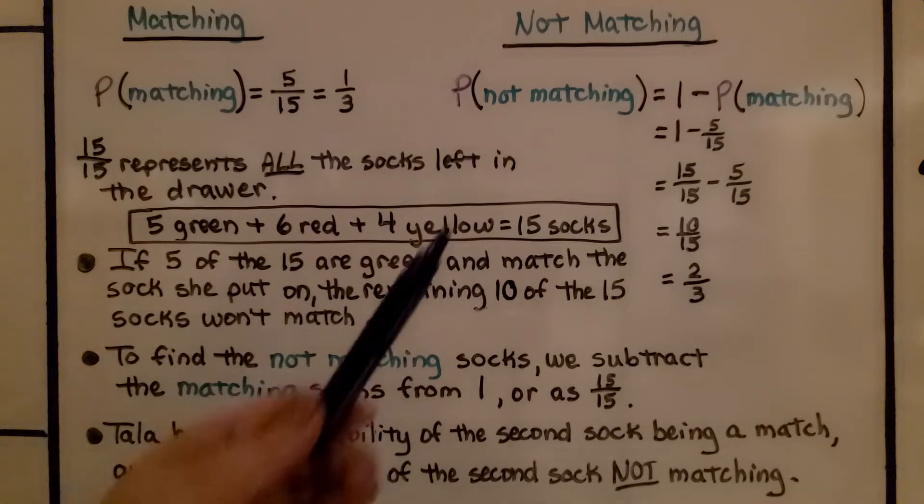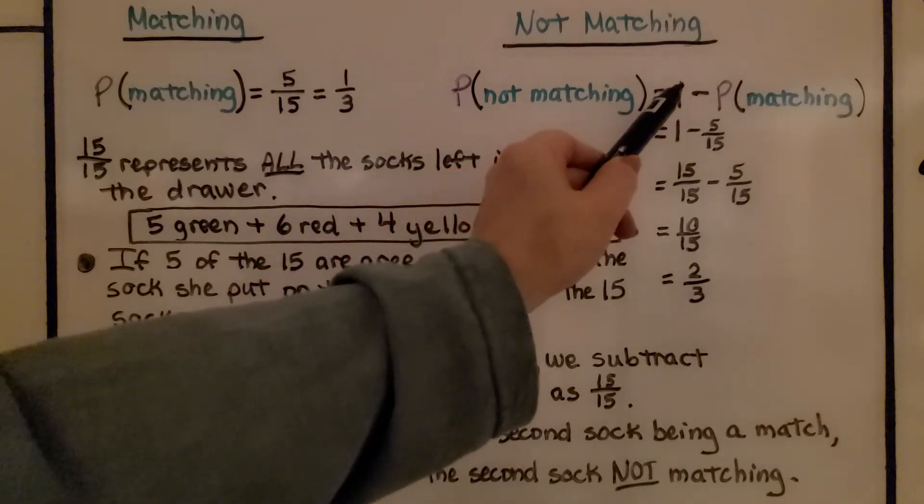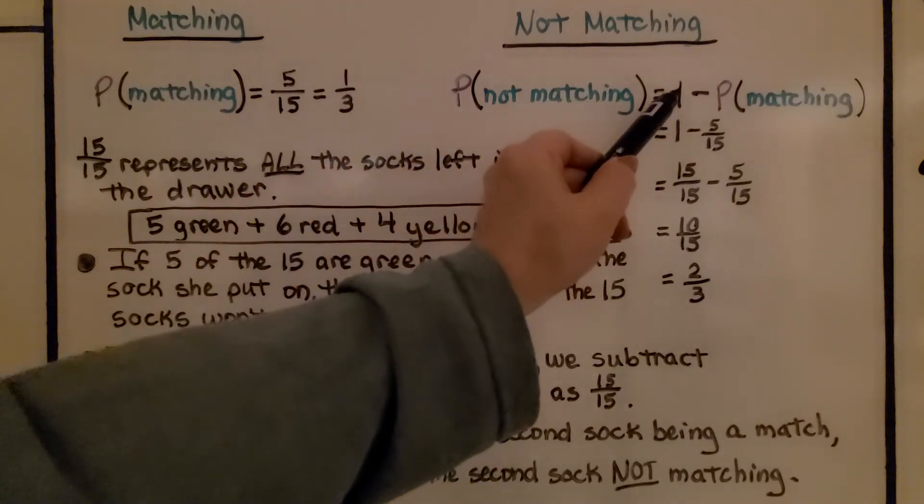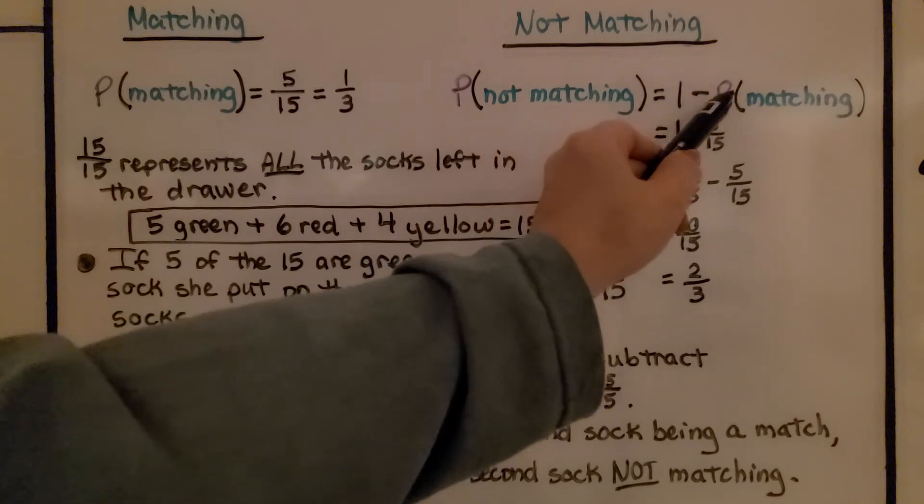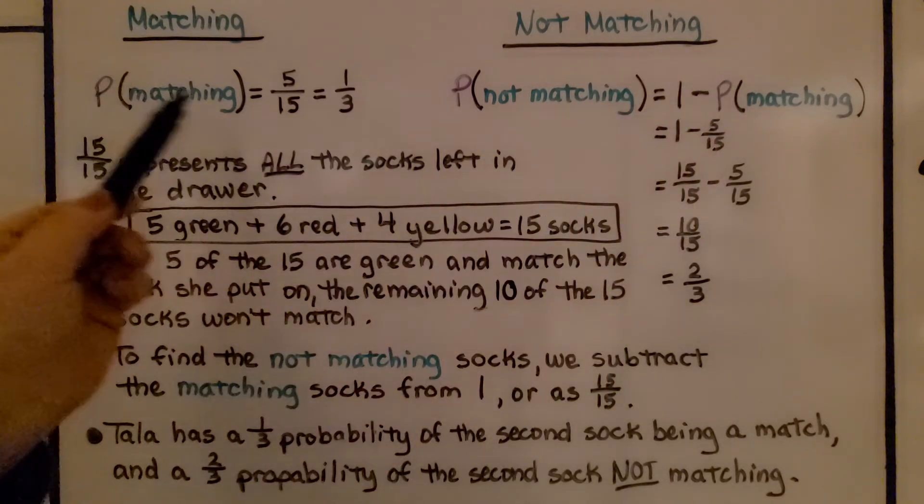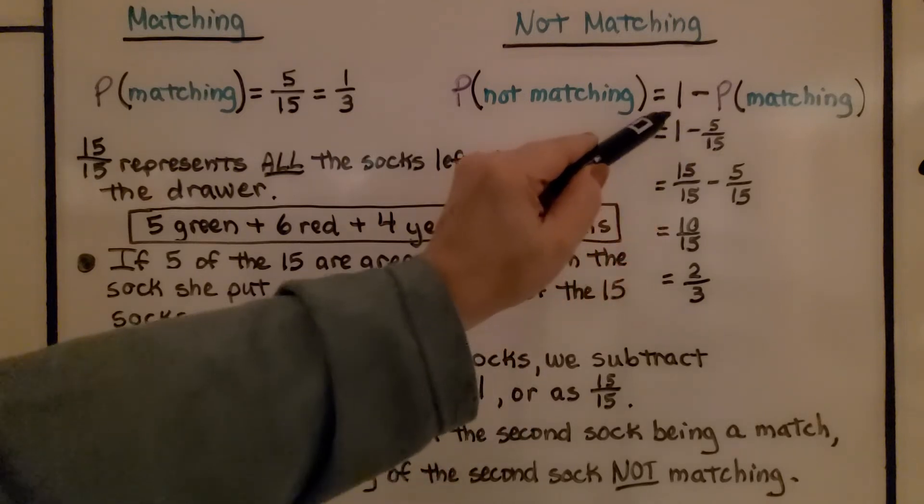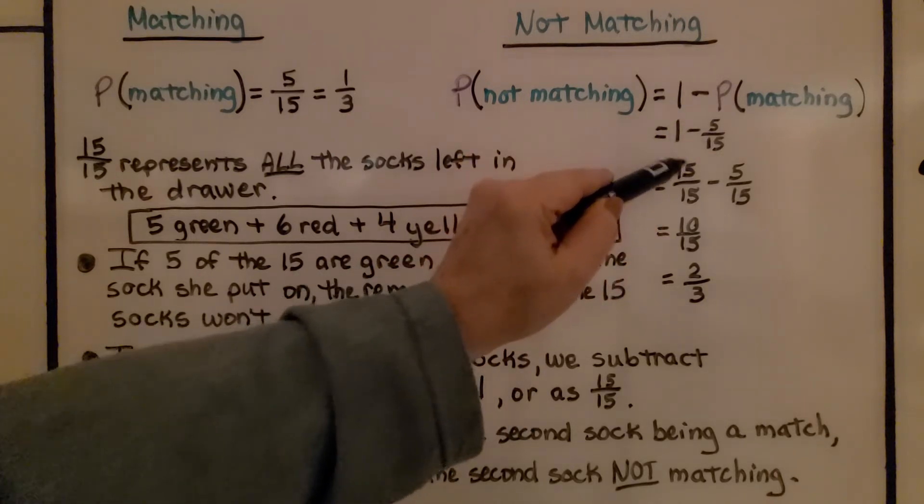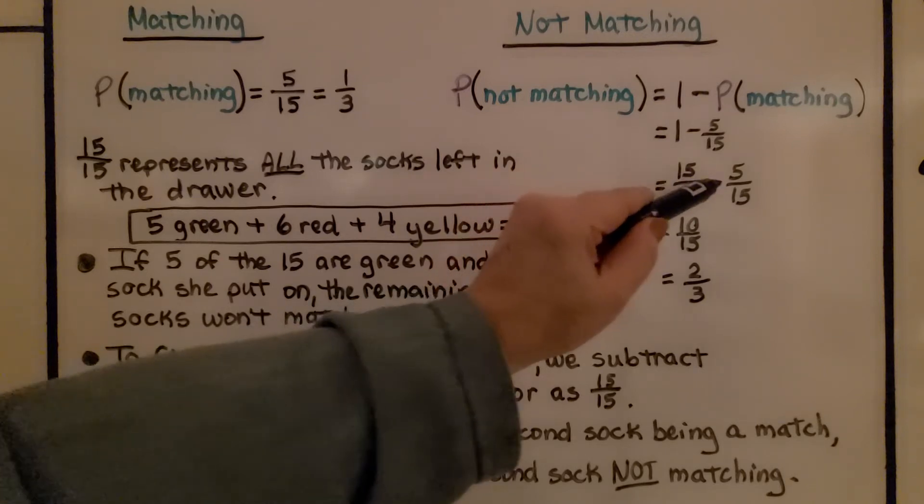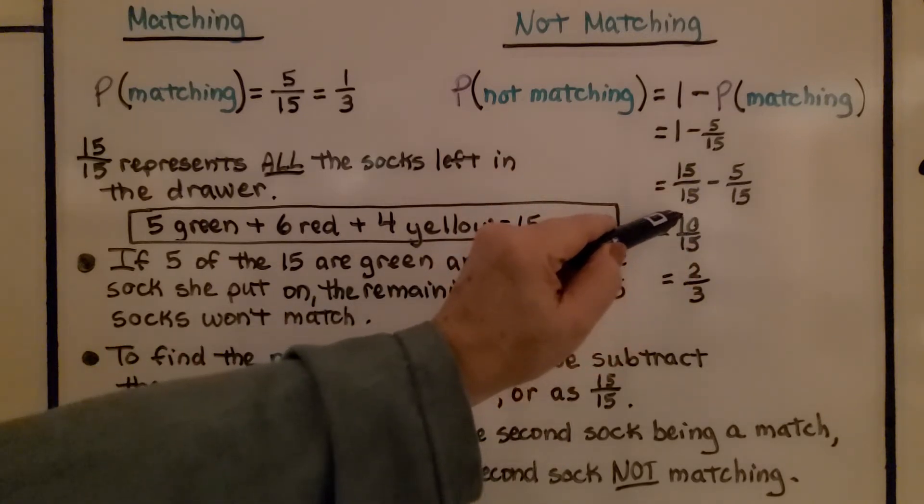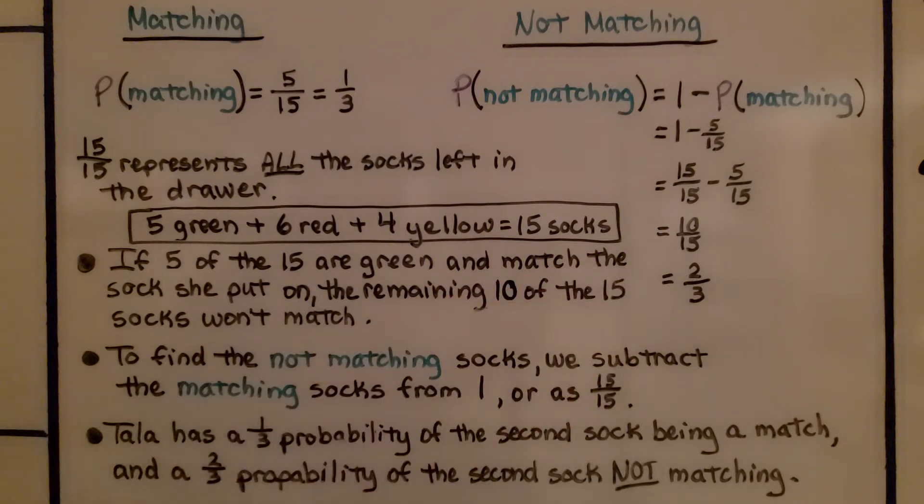For the not matching, we subtract this one third from one. We do one minus the probability of matching, which is one third. We can do it as five-fifteenths and one is 15-fifteenths. Same numerator and denominator. So that's one minus five-fifteenths is 10-fifteenths. That's equal to two thirds when simplified, which makes sense.